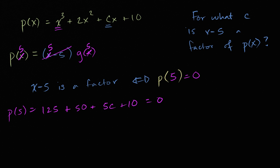And let's see, if we add 125 to 50 to 10, we are going to get 185. So we get 185 plus 5c is equal to zero. Subtract 185 from both sides, you get 5c is equal to negative 185.